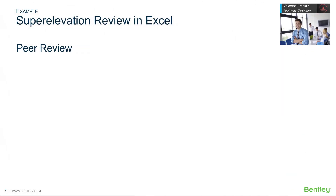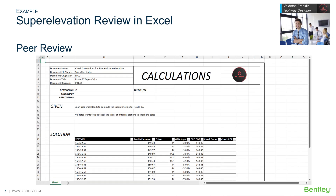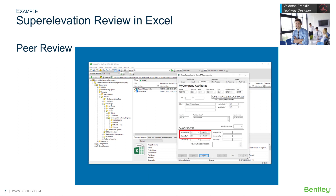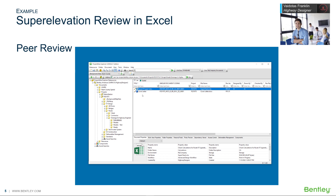In this example, Valiadotis' teammate Joan recently used OpenRoads Designer to create a superelevation report. She used the report to create an Excel worksheet. Valiadotis will do a peer review to check edge pavement elevations along Route 97. In this case, Valiadotis clicks the spacebar in ProjectWise Explorer to view the document's attributes to see that Joan has finished the report, so he knows it's ready for his review.